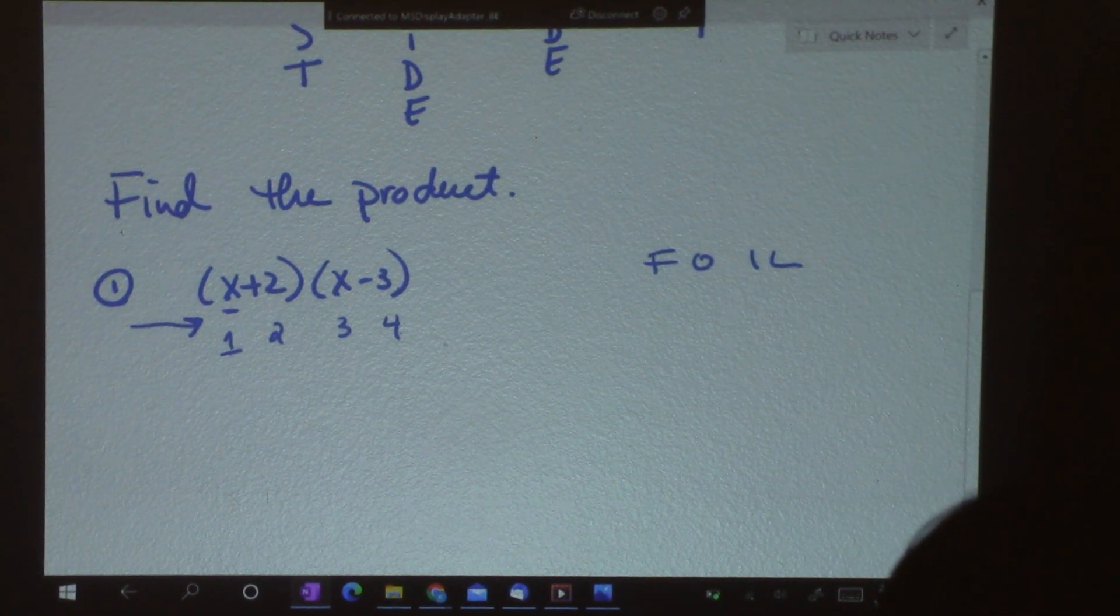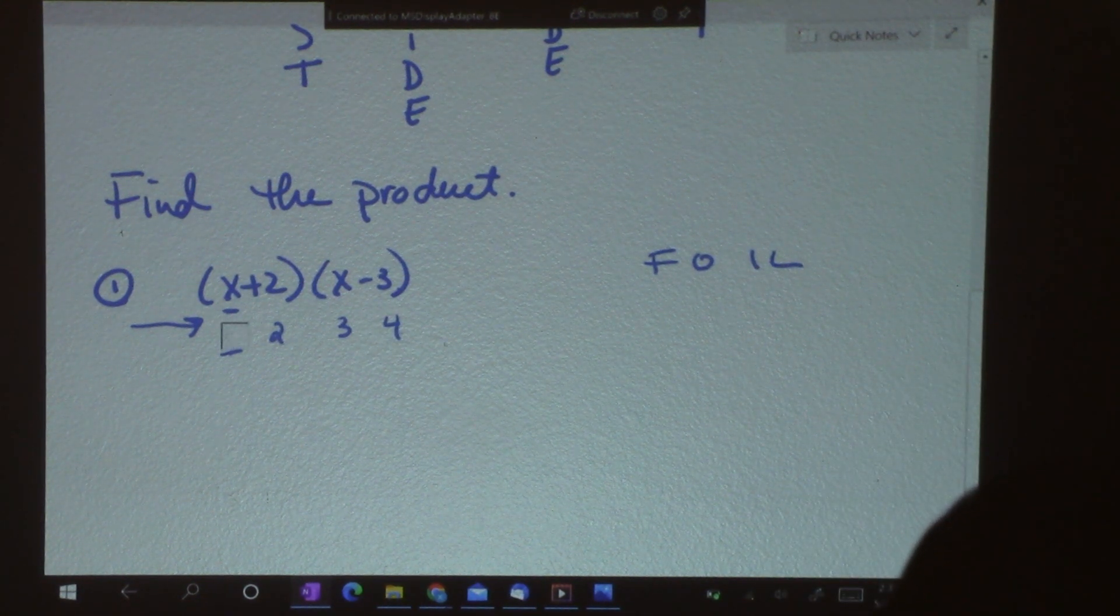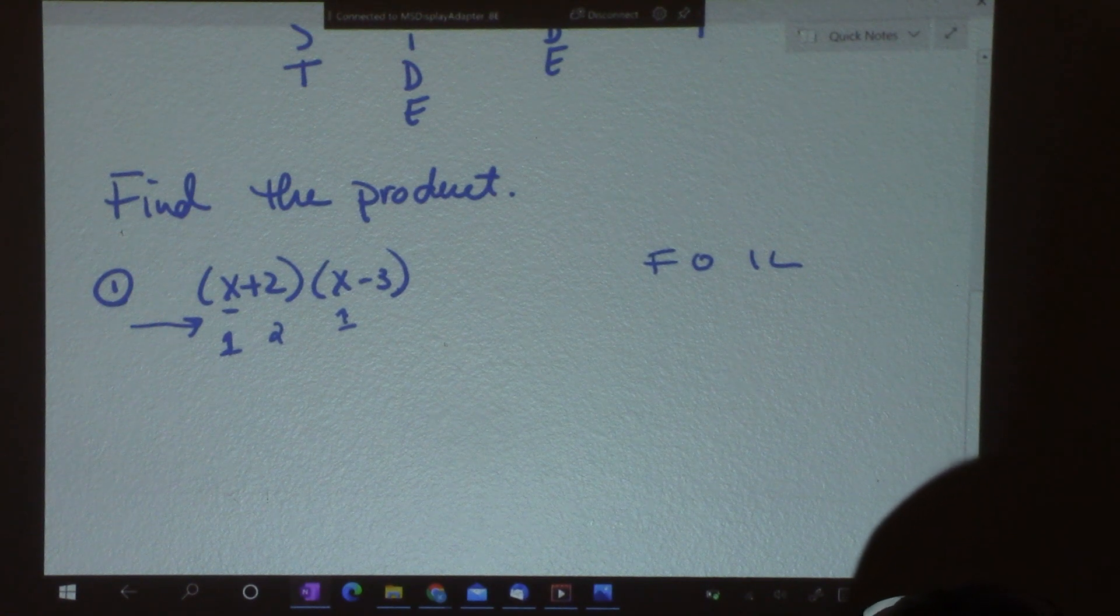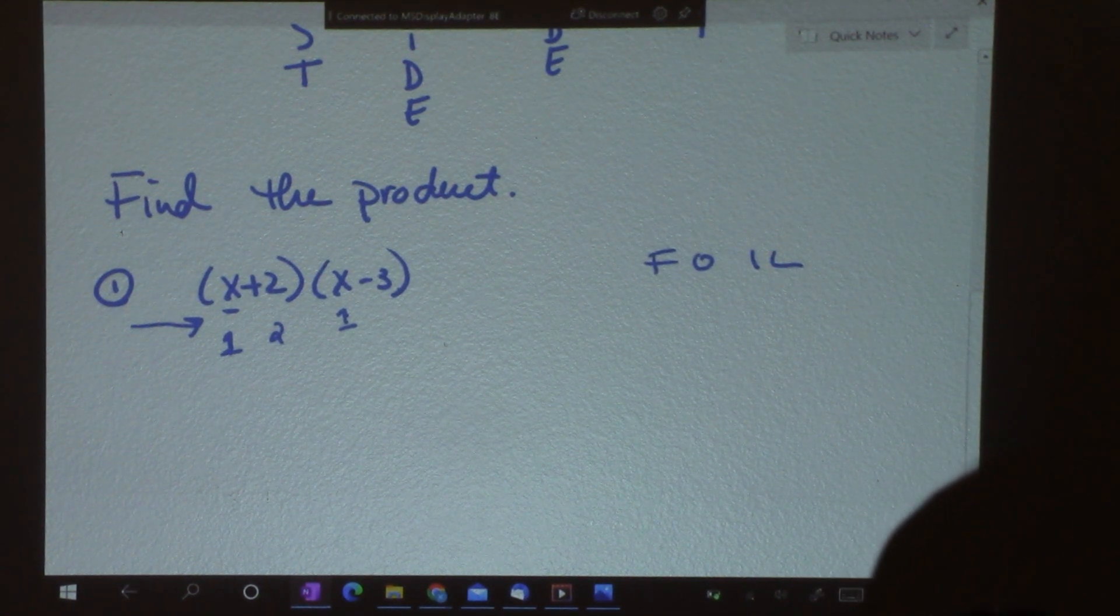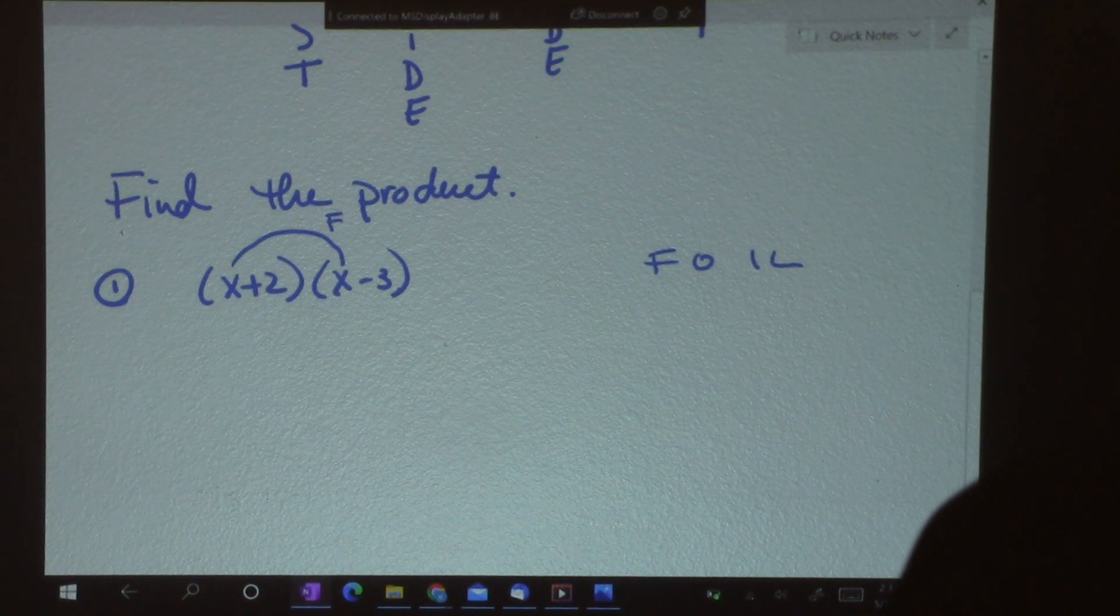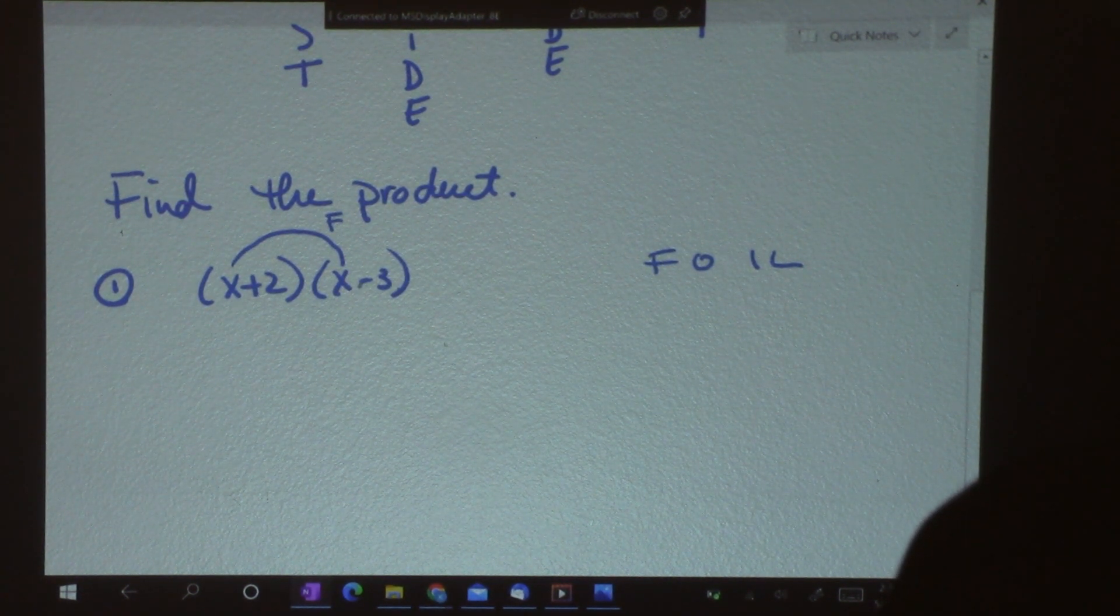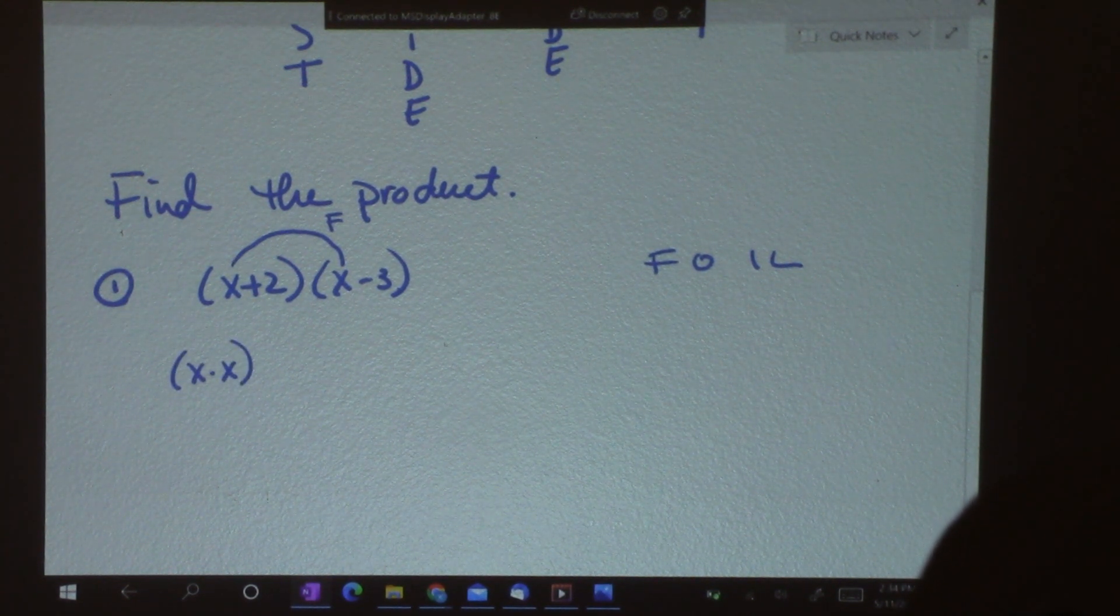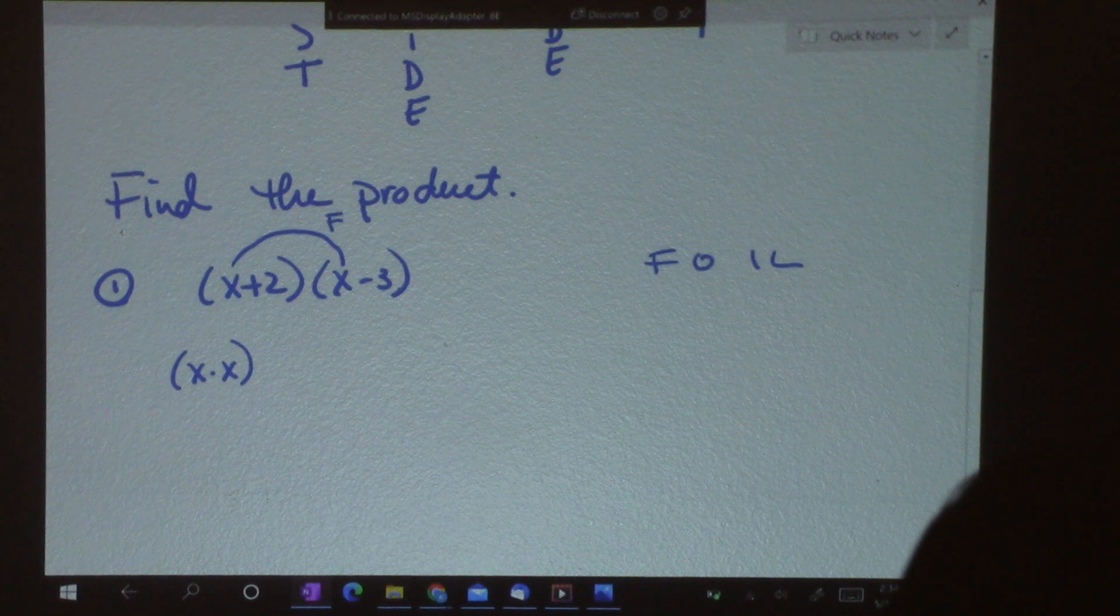Now, there's a couple other ideas I want to show you. You could also say that this is first, and this is also first, because it's the first term in our second binomial. So, if I want to multiply first, I'm multiplying the first term in this parentheses times the first term in the second parentheses. So, that would be x times x.